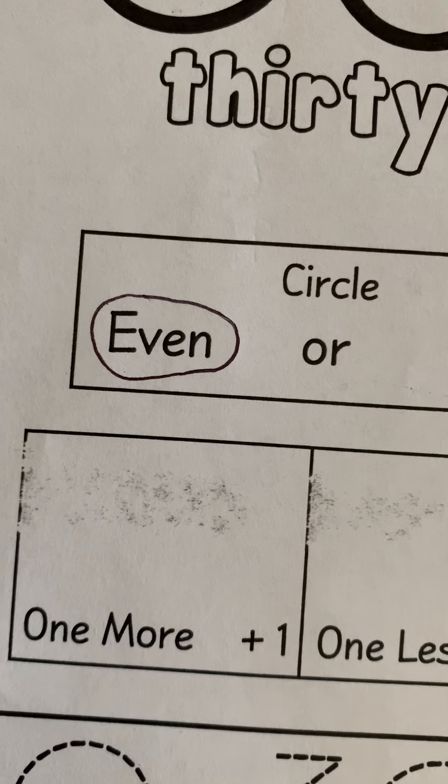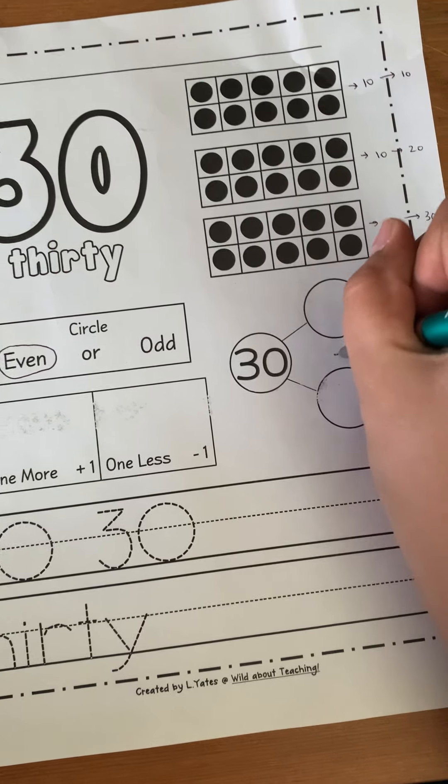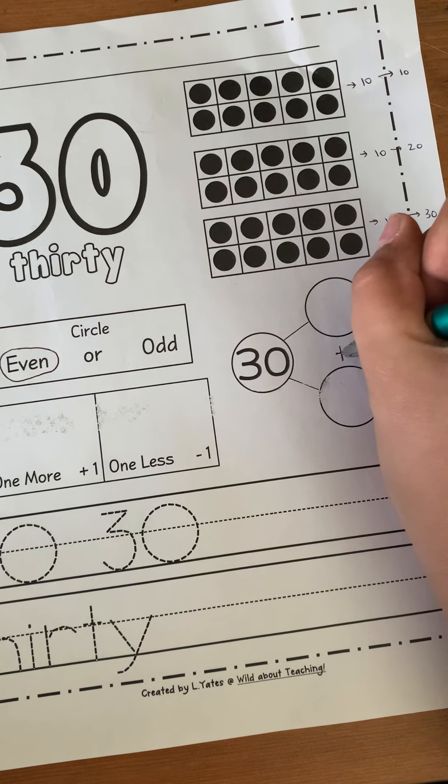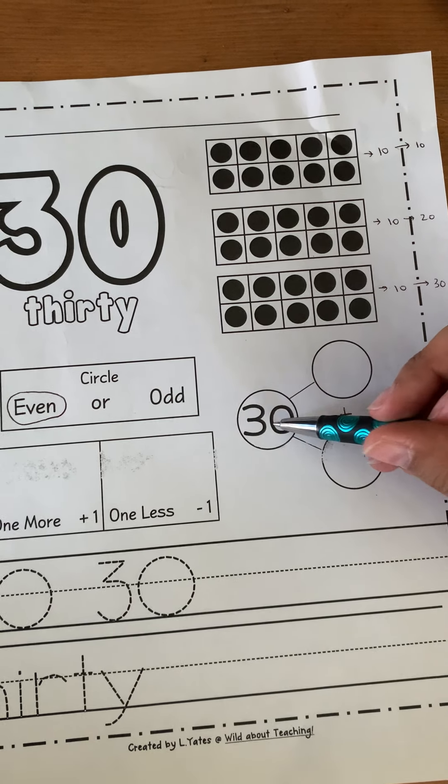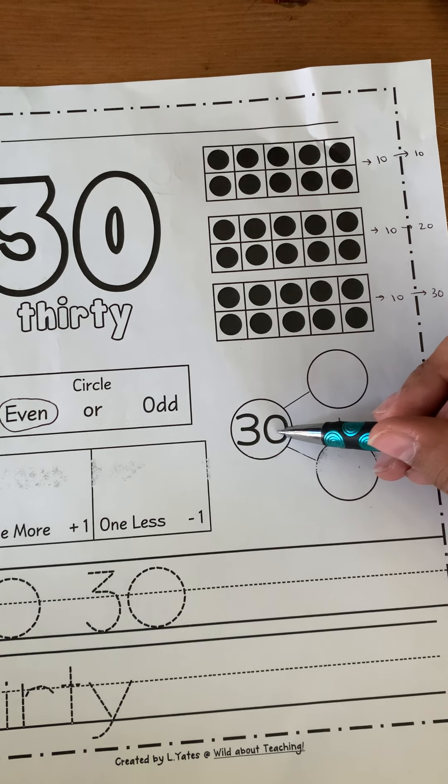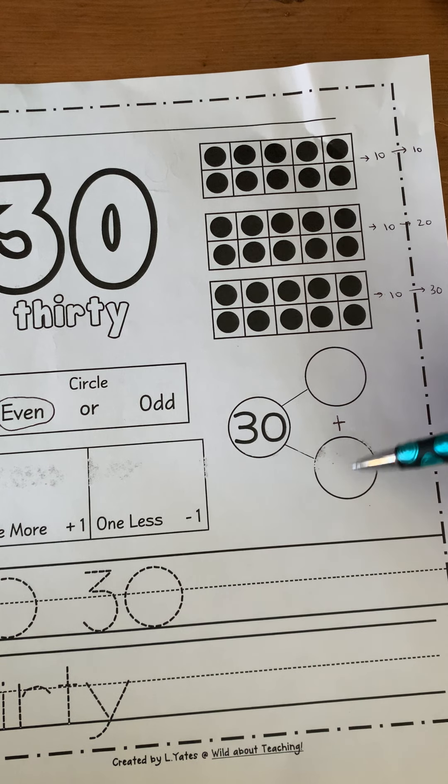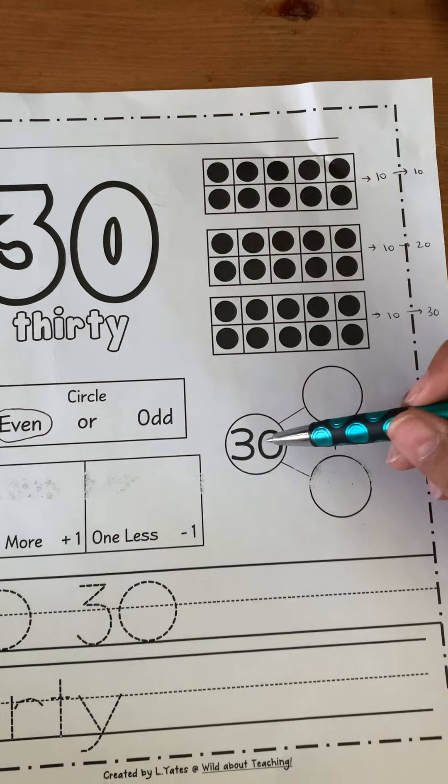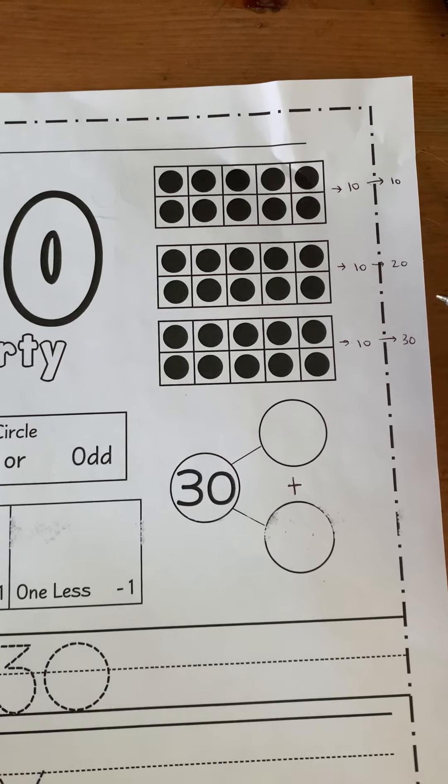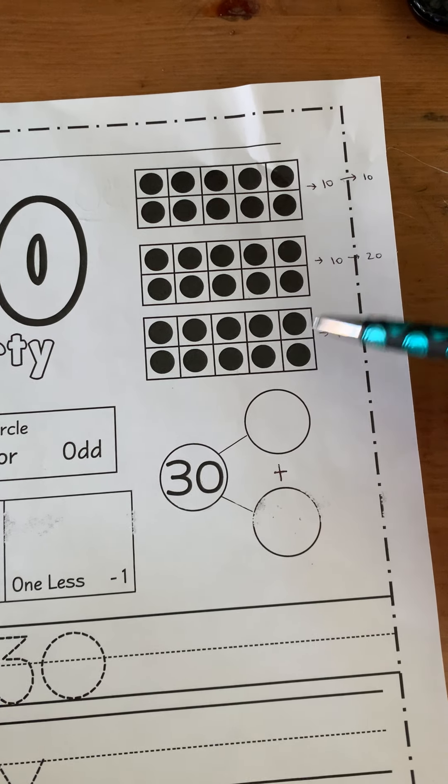Now I'm going to go to my bubbles. And I'm going to put my plus sign in the middle. Because remember, here we're adding. We're adding to get the sum of 30. Or we want two numbers to make 30. We're going to add these two to get the 30.